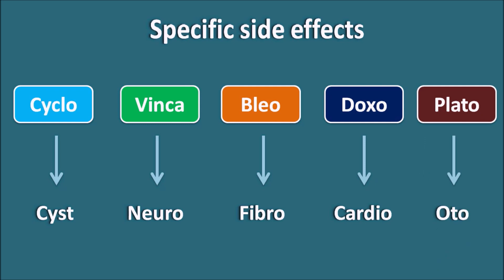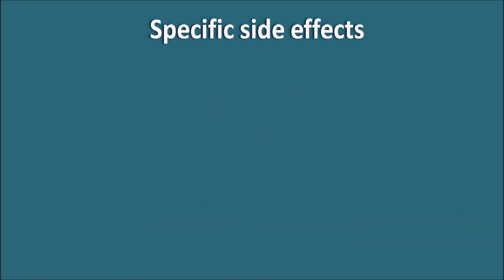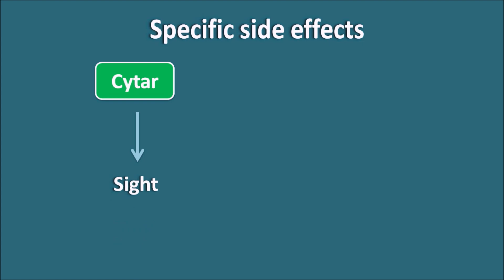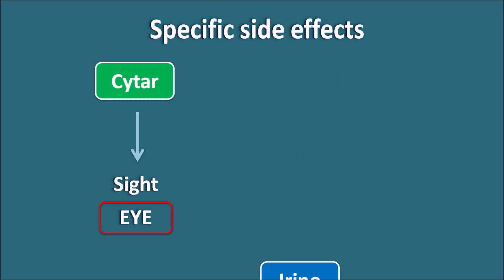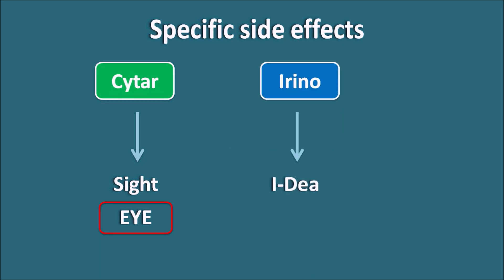That means: cyclo indicates cyclophosphamide, which produces cystitis. Vinca alkaloids produce neuropathy. Bleo — bleomycin — produces pulmonary fibrosis. Doxo — doxorubicin — produces cardiotoxicity. Platinum compounds produce ototoxicity. Cytar is for sight — cytarabine produces toxicity on the eye. And irono can be remembered as 'idea' — irinotecan produces diarrhea.